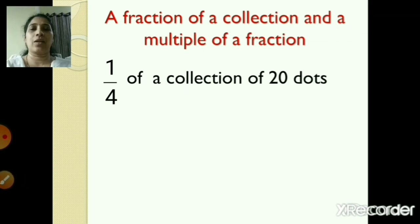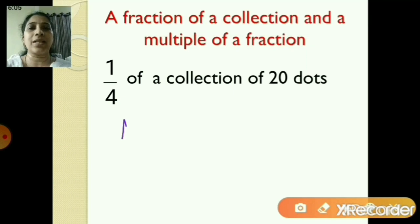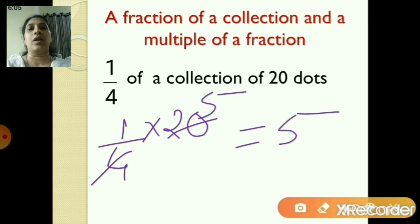Now we are going to move to the next part of this lesson — a fraction of a collection and a multiple of a fraction. For example, 1 upon 4 of a collection of 20 dots. You will write it as 1 upon 4 into 20. You just need to check whether the denominator can divide the whole number.